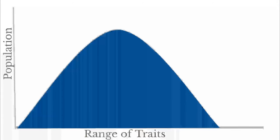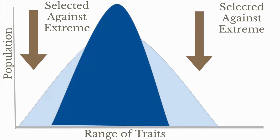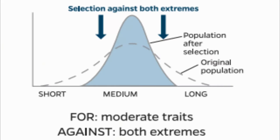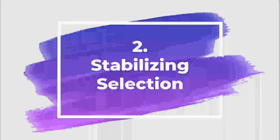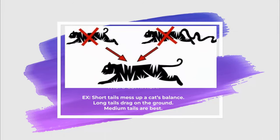The next graph: we have our average. If I select against both extremes, those individuals are going to die off, which means the individuals in the center are going to keep surviving and reproducing. My new population is going to be high in the average. What I'm selecting for are the medium-moderate traits — those have a higher fitness. I'm selecting against both extremes, so overall the curve becomes more narrow. This is called stabilizing selection. In stabilizing selection, individuals near the center of the curve have higher fitness than individuals at either end. Over time, the average traits become more common. Looking at a cat: short tails mess up a cat's balance — they're going to die off. Long tails drag on the ground — they're going to die off. Medium tails are the best — they're going to survive.